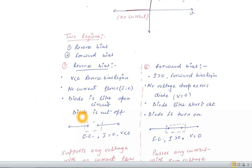And it can be considered as cut off. Diode is cut off in the reverse bias region and diode is turned on in the forward bias region.